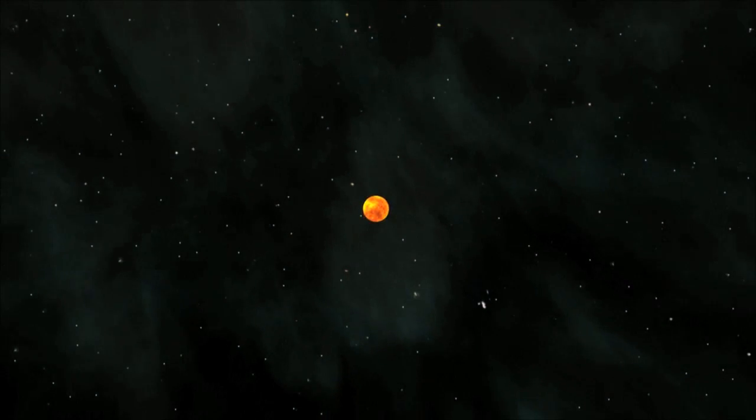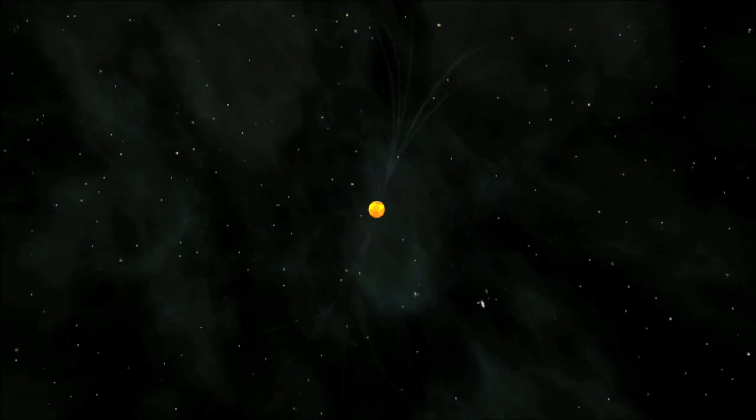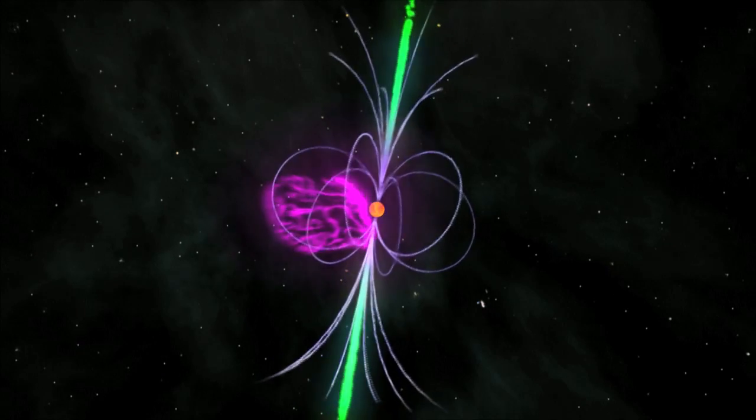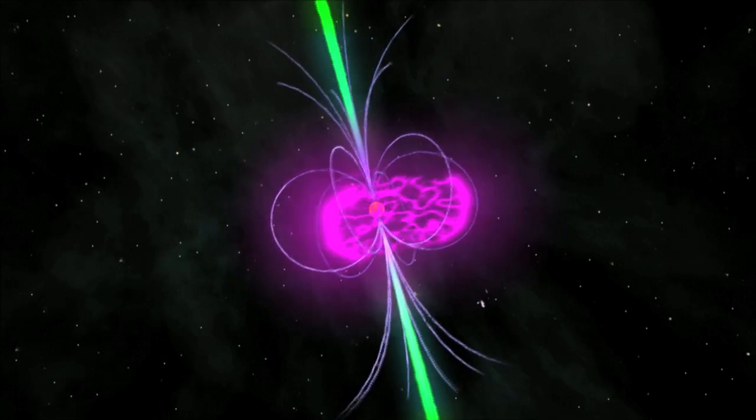At the end of its life, all that may be left of a very large star is a tiny, super-heavy, tightly-compacted rotating neutron star called a pulsar.